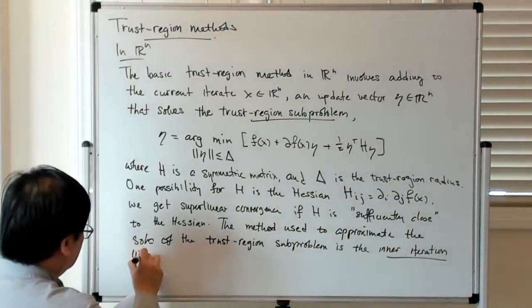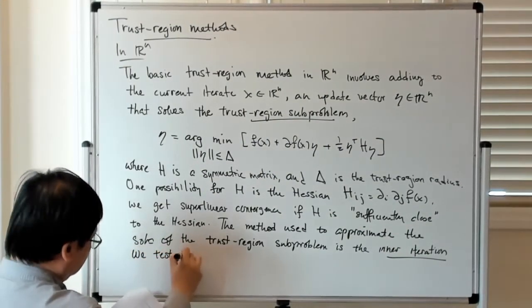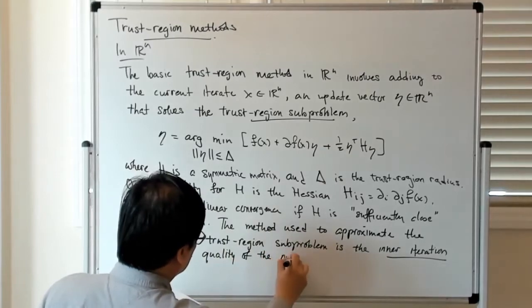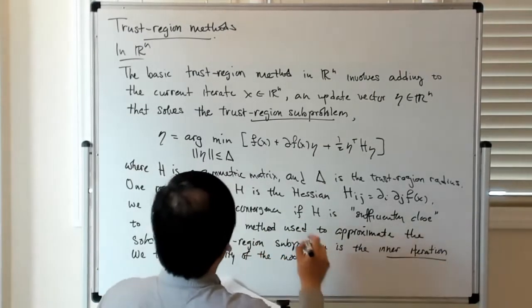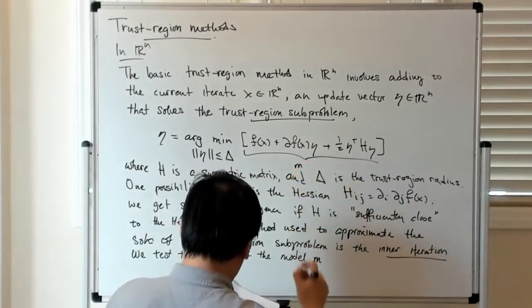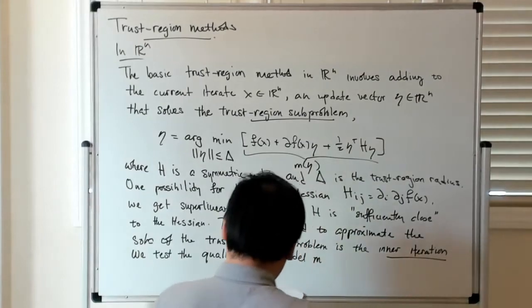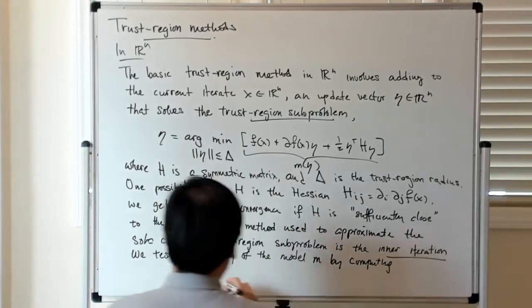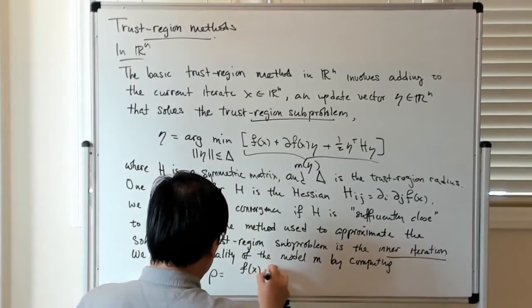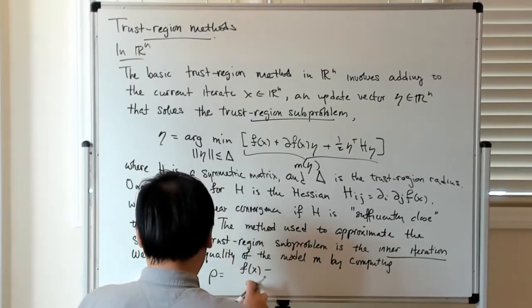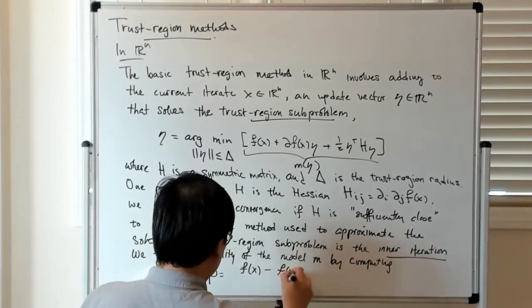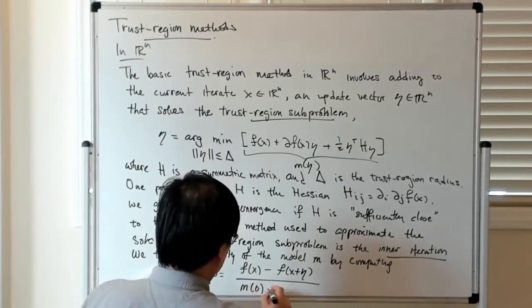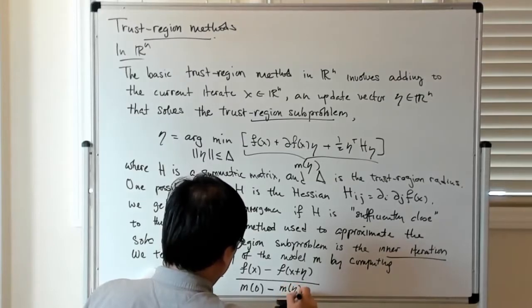So we test the quality of the model M by computing this quotient rho, which is the difference between F, essentially the decrease going from F of x to F of x plus eta and comparing it to what you would expect from the model M of 0 versus M of eta.